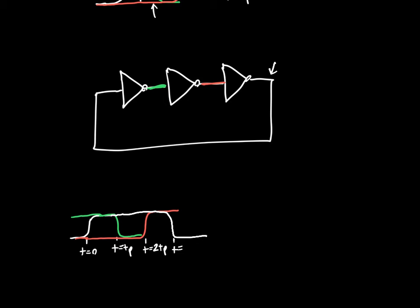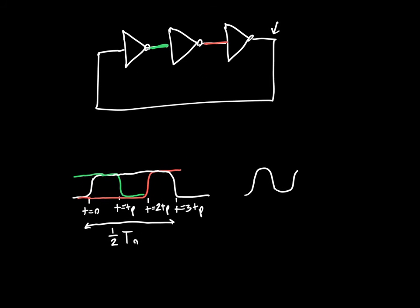And from this, if we continue this on further, we can see that this is one half of a period because this is just the high cycle of an oscillation. We know that there's going to be a low cycle after that that's going to last just as long.